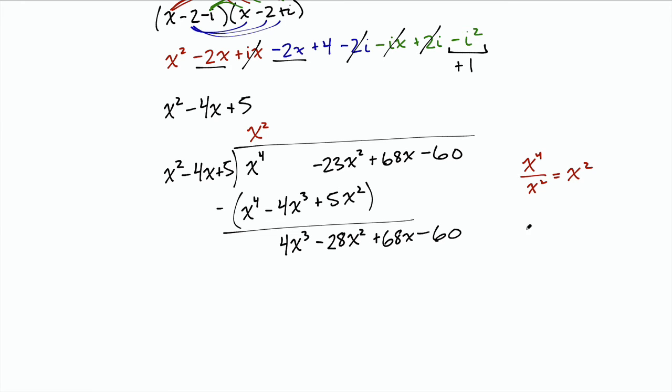And now we take 4x cubed and divide that by the first term here, x squared. And that gives us 4x. So we have plus 4x up here. We multiply that by our divisor. That gives us 4x cubed minus 16x squared plus 20x. And we subtract. The 4x cubed cancels. Negative 28x squared plus 16x squared is negative 12x squared. 68x minus 20x is 48x. And then the minus 60 comes down.